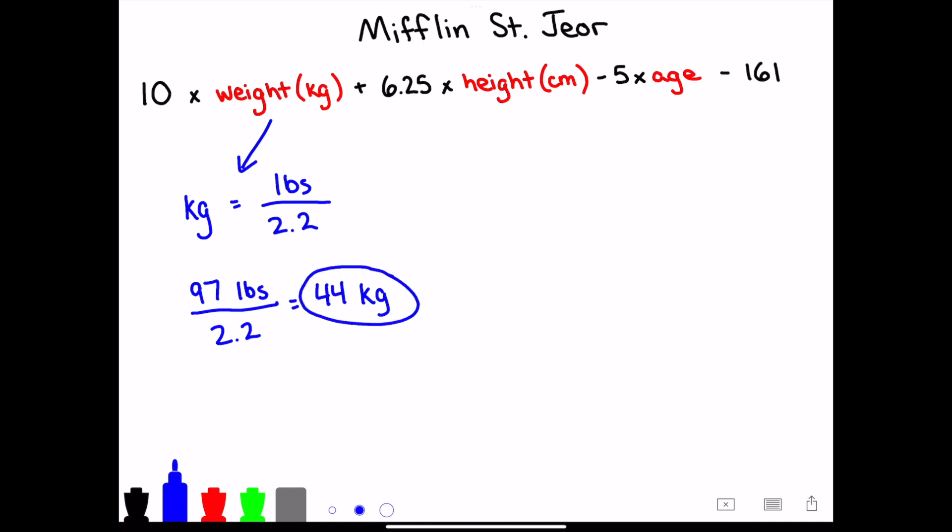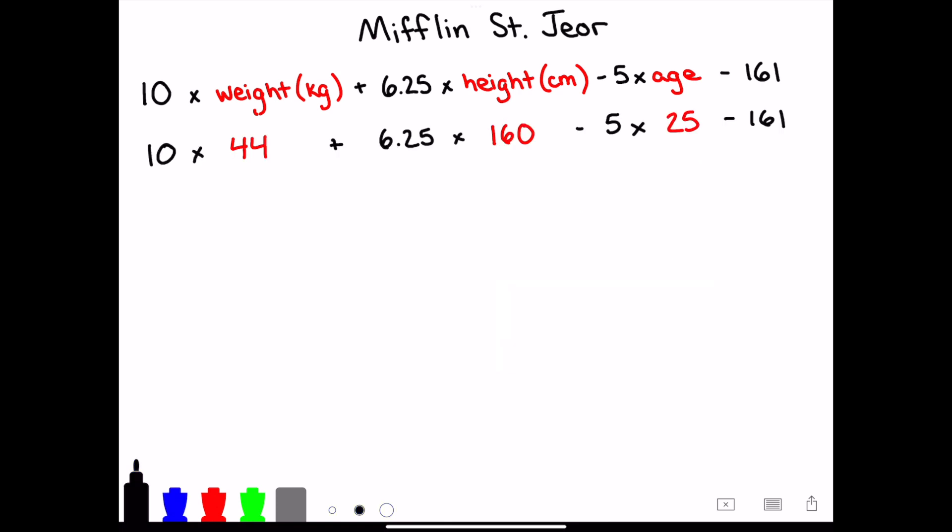We can round up to the nearest whole number to keep things simple. All we have left is age, which doesn't require any math. Woo! Now we plug and chug. Psst! Don't forget order of operations. Working through the math, I get 1154 kcal. If you're looking at your answer and wondering why the number is so low, it's because we aren't done yet. The number that we just calculated is our basal metabolic rate, or BMR.